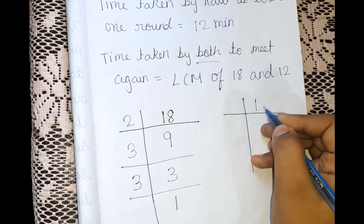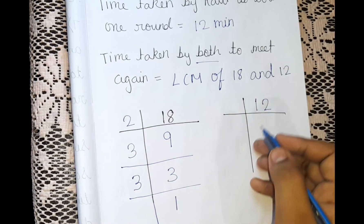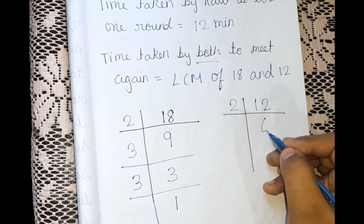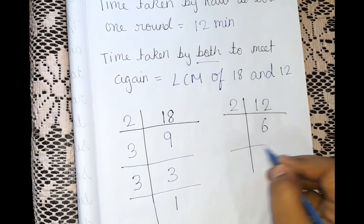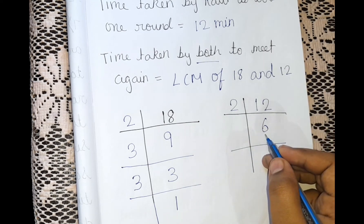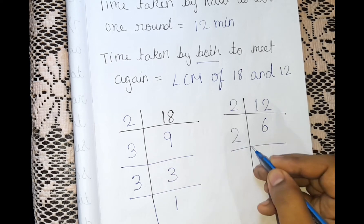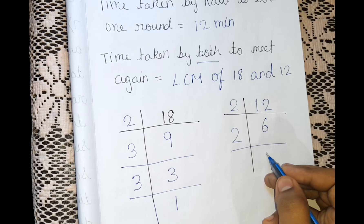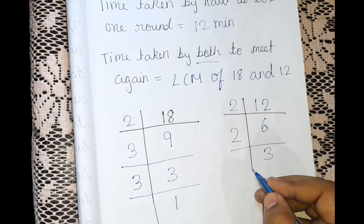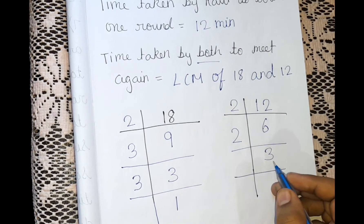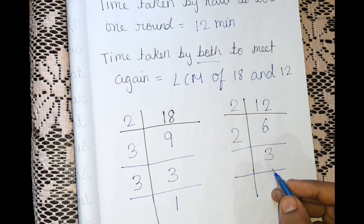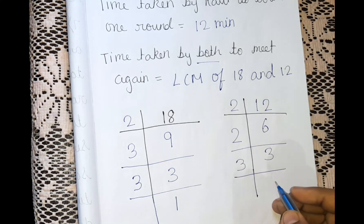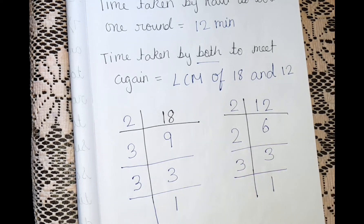Now let's solve 12. The last digit is 2, so we use the 2 times table. 6 twos are 12, so we write 6. For 6, we again use the 2 times table: 3 twos are 6, so we write 3. We can't get 3 in the 2 times table, so we take the 3 times table: 1 three is 3, so we write 1. So 12 = 2 × 2 × 3.